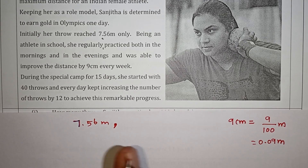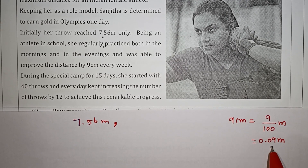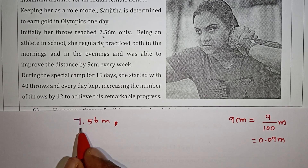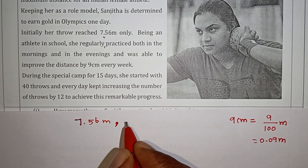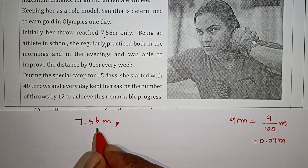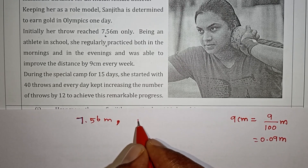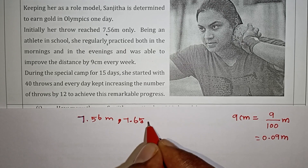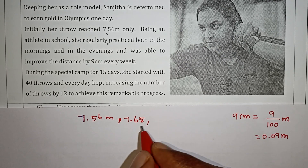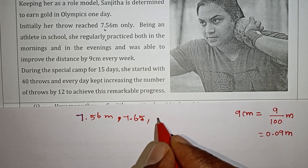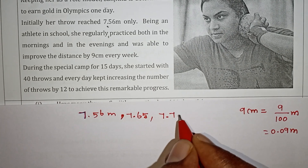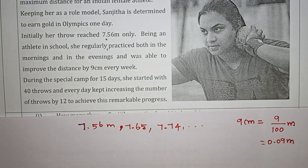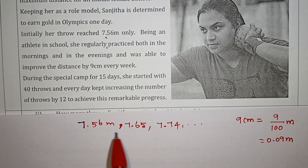Initially, the throw is 7.56 meters. After 1 week of practice, you add 0.09 meters, giving 7.65 meters. The next week, you add another 0.09 meters. Each week you keep adding 0.09 meters, so you can see the distance is increasing. This forms an arithmetic progression with first term a = 7.56 and common difference d = 0.09.